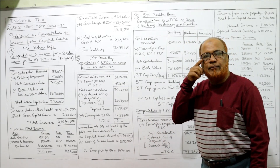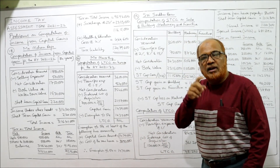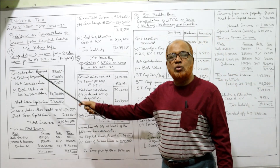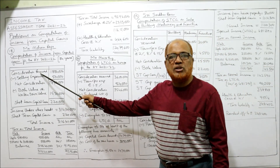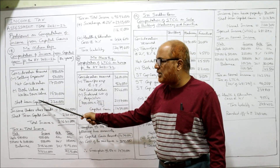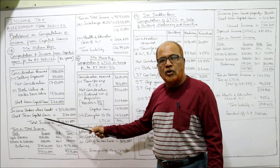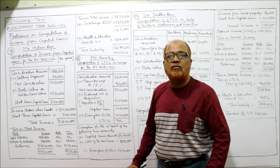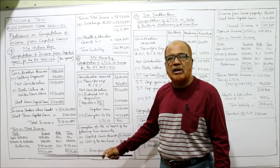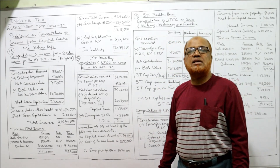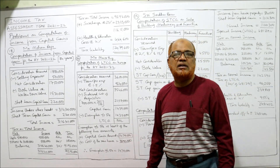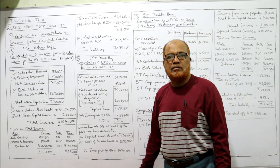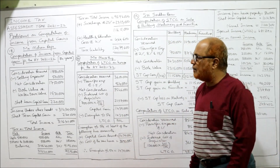That is the end of problem 18. What you learned: the assessee is using a depreciable asset, so short-term capital gain arises. We add normal income plus short-term capital gain to get total income, on which the slab system applies. The assessee is a super senior citizen, so the basic exemption limit is 5 lakh rupees.